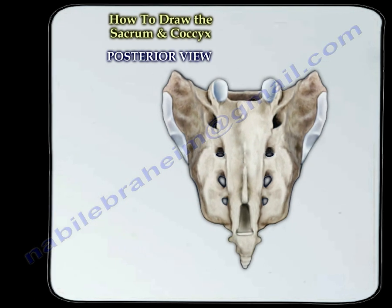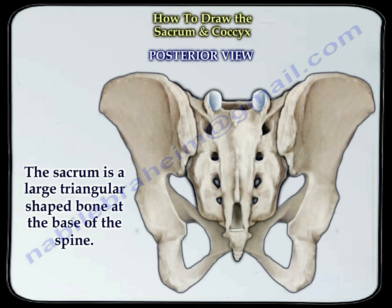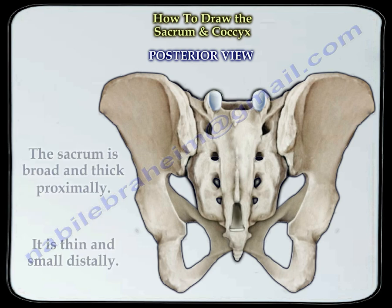From the back, the sacrum is a large triangular-shaped bone at the base of the spine. The sacrum is broad and thick proximally, and thin and small distally.